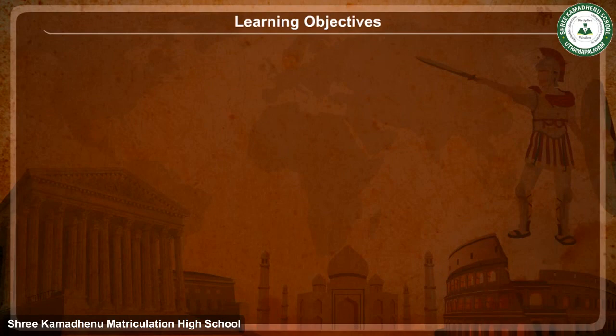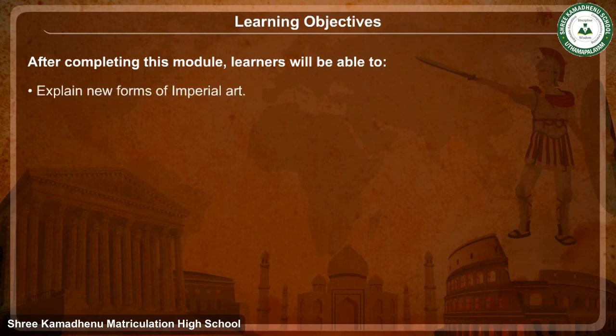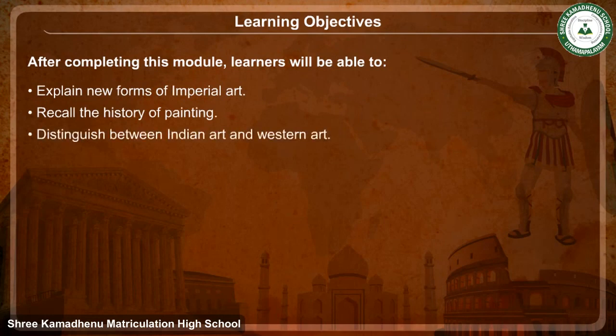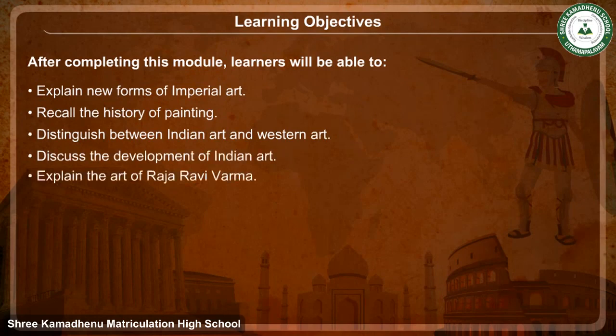Learning Objectives. After completing this module, learners will be able to: explain new forms of imperial art, recall the history of painting, distinguish between Indian art and Western art, discuss the development of Indian art, explain the art of Raja Ravi Verma, and enlist the different visions of national art.